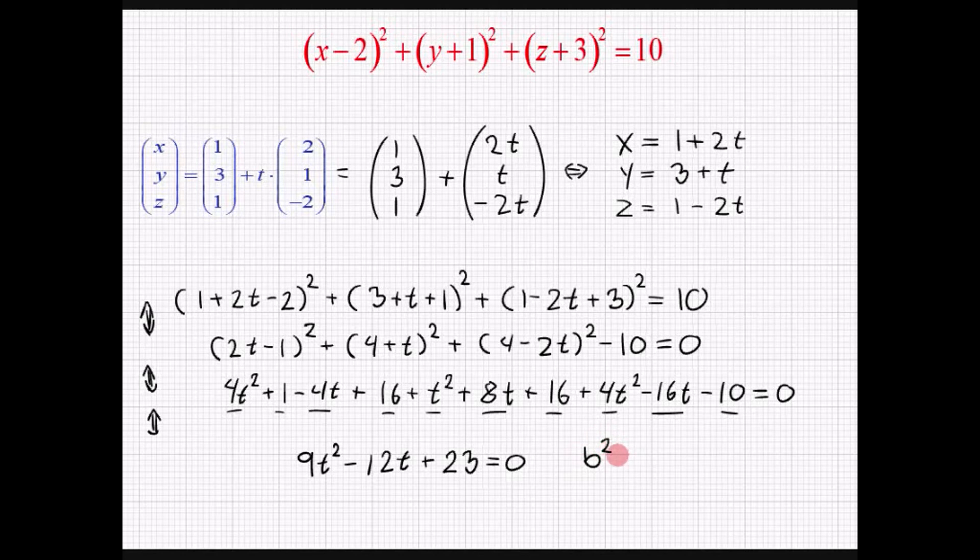Vi starter med at beregne diskriminanten. B i anden minus 4 gange A C. B det er lige minus 12. Så vi siger altså minus 12 i anden. Det giver 144. Og i det næste led, der har vi altså minus 4 gange med 9, det er minus 36, gange med 23. Det giver altså minus 828. Det vil sige at sum af disse to led er altså mindre end 0. Med andre ord så vil linjen og kuglen altså aldrig komme til at skære hinanden, da diskriminanten er negativ.